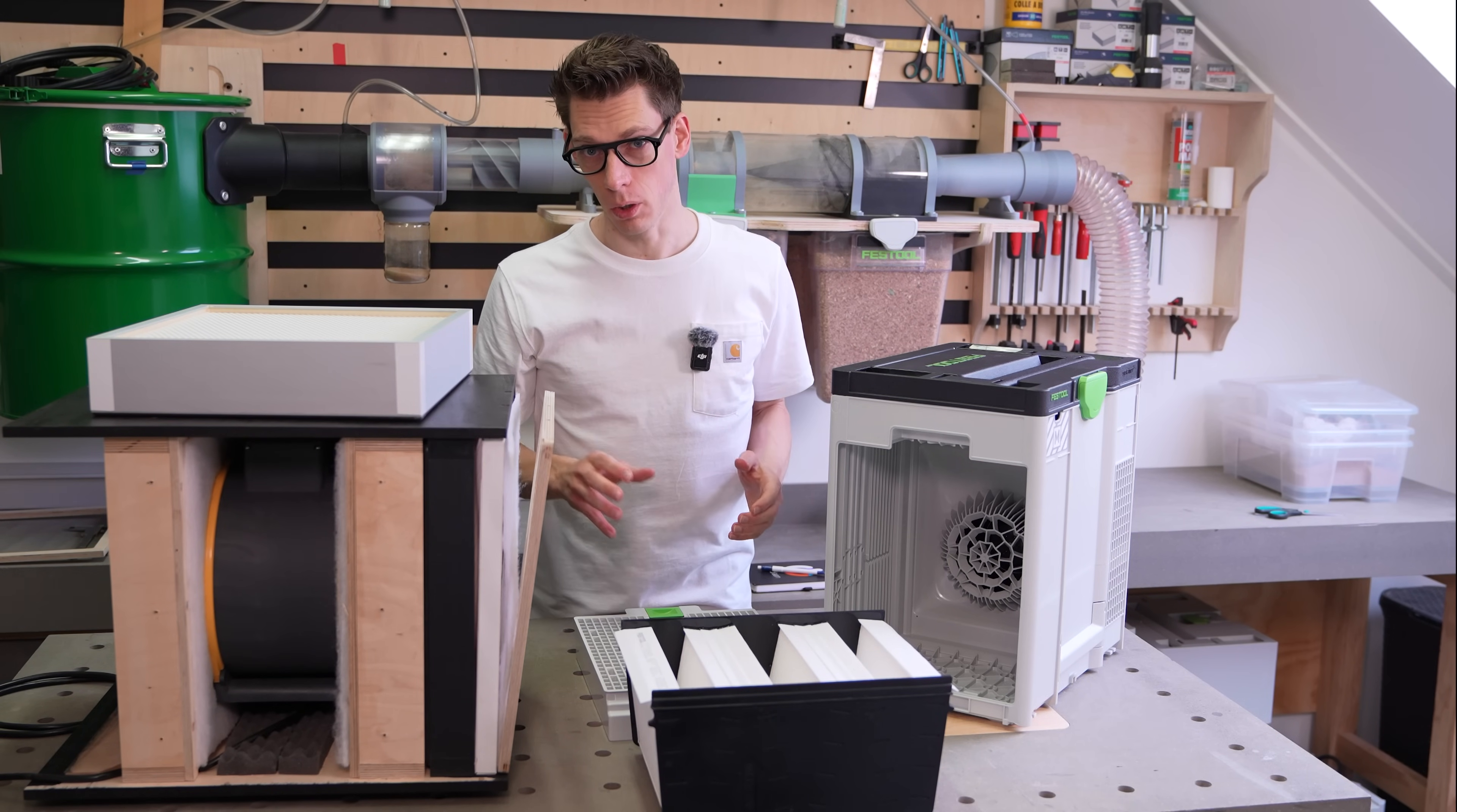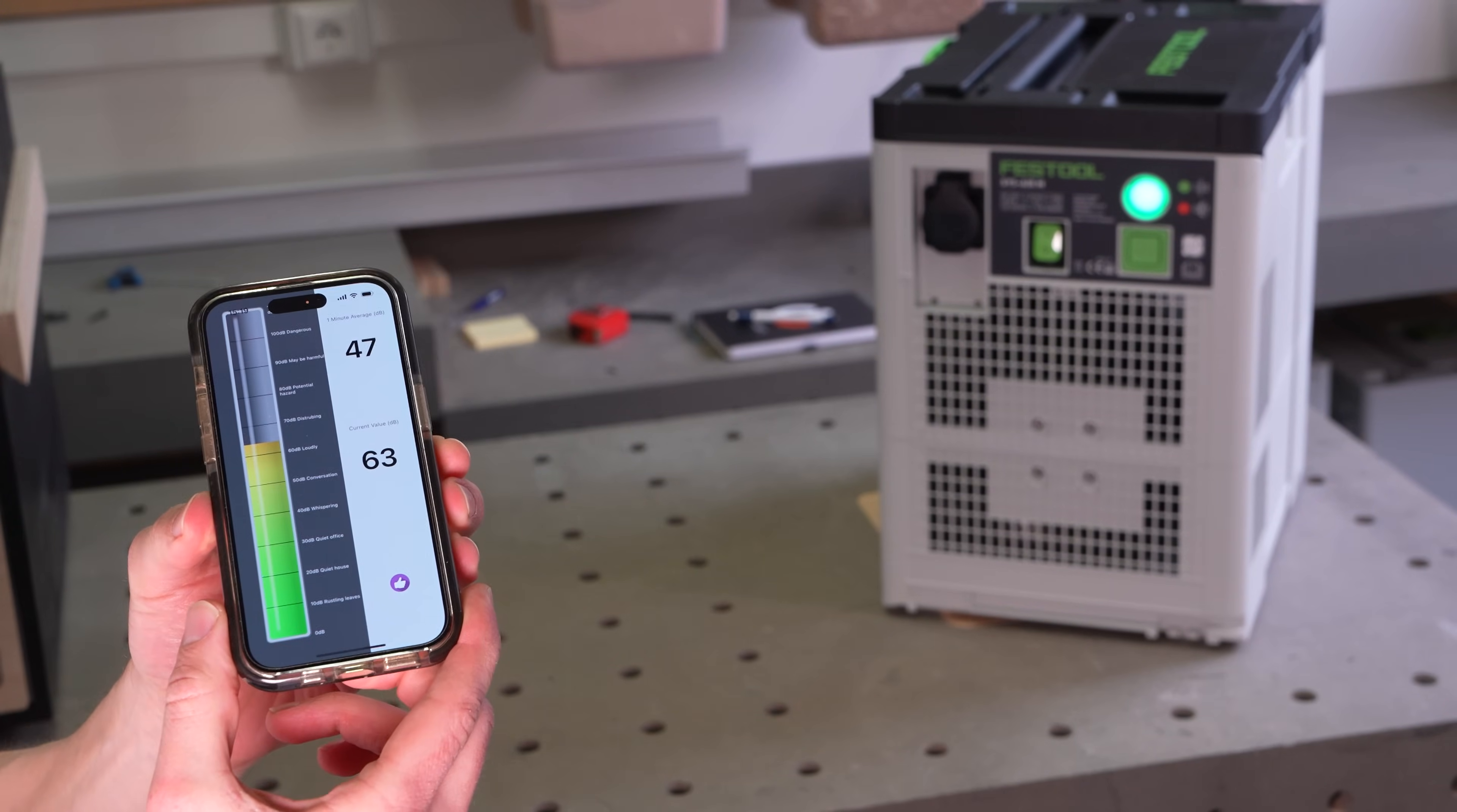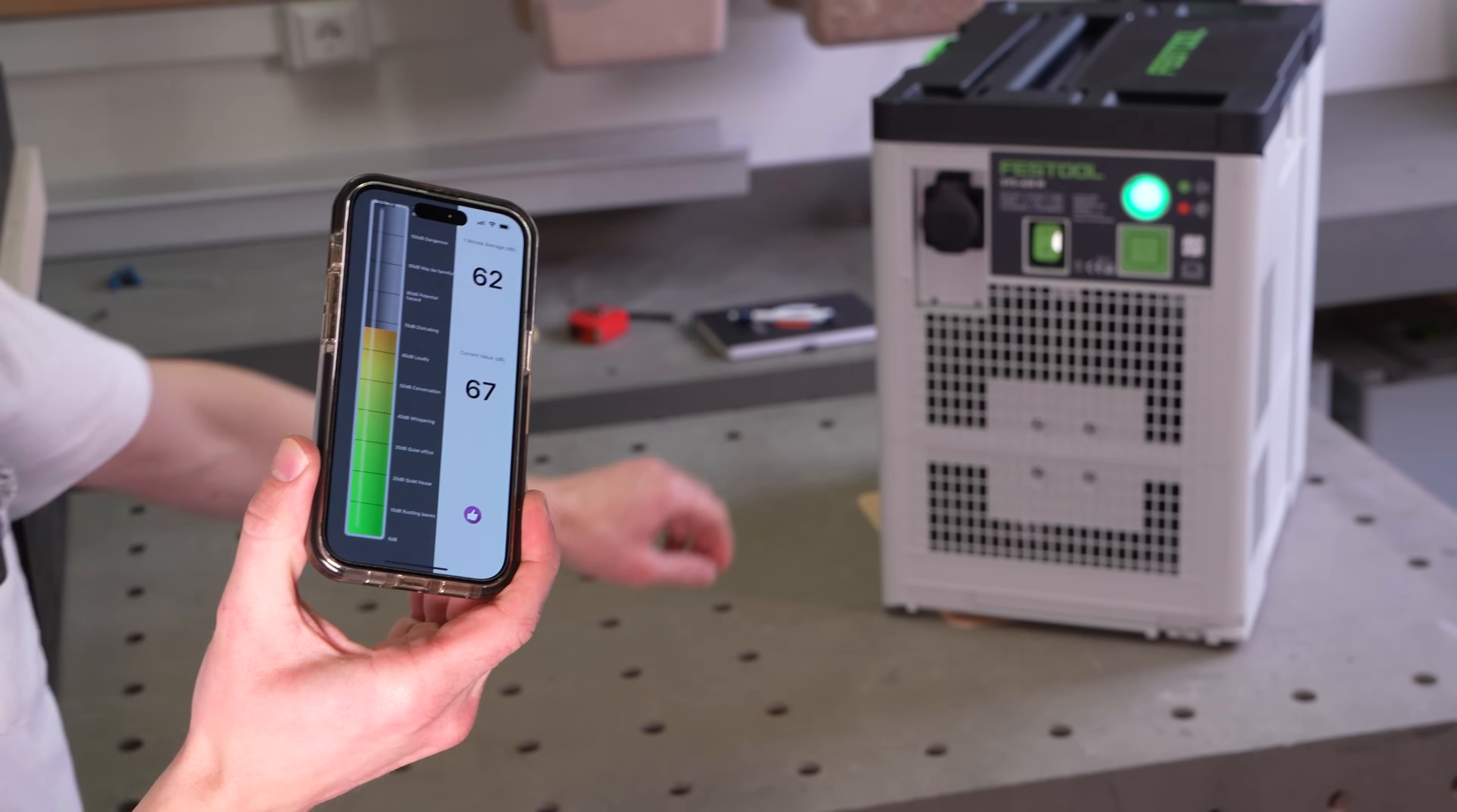To get an indication on the sound levels in the different setups, I use my phone to measure the decibels they produce. And in eco mode, the Festool needs some time to slowly come up to speed. Let's try level two, that is the max performance.